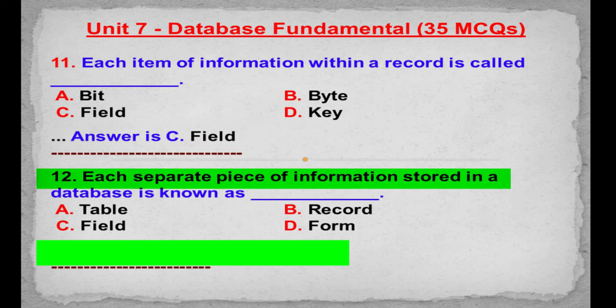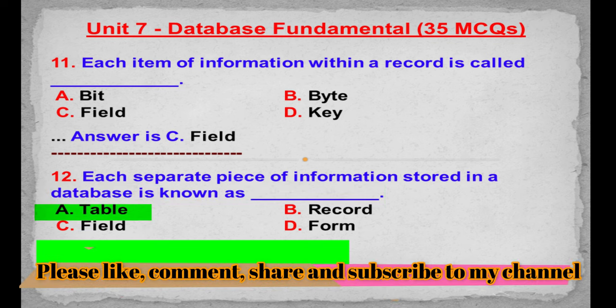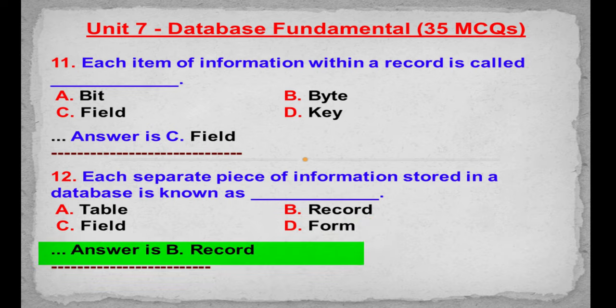MCQ number 12: Each separate piece of information stored in a database is known as. Option A: Table. Option B: Record. Option C: Field. Option D: Form. Correct answer is Option B: Record.